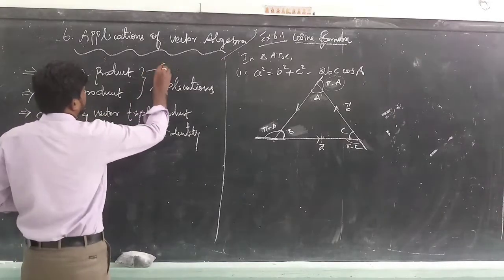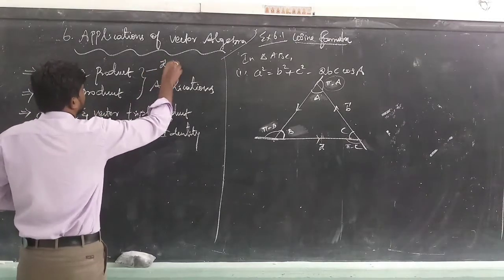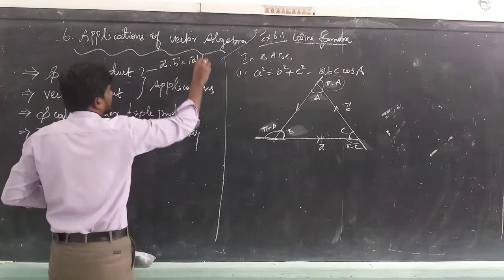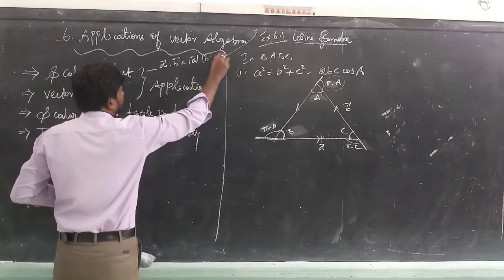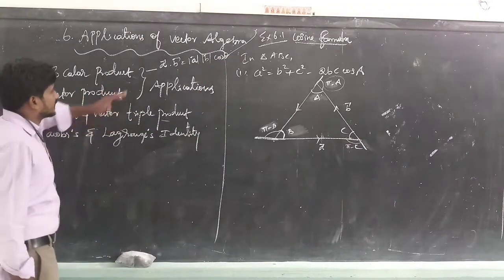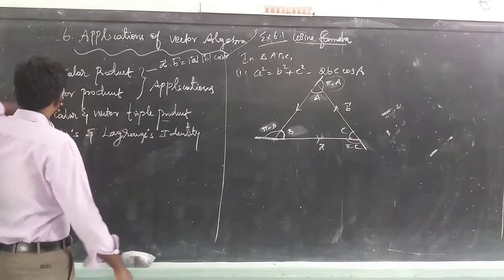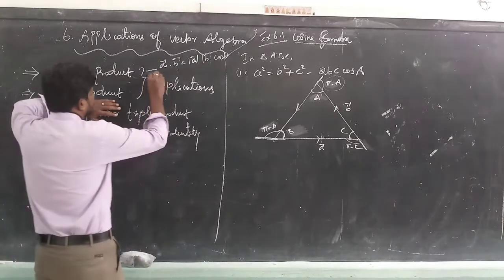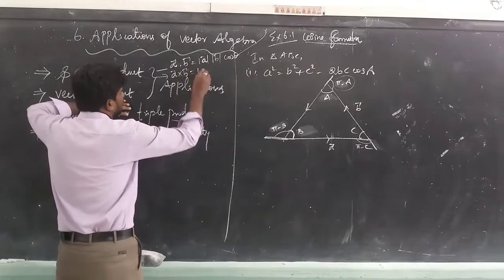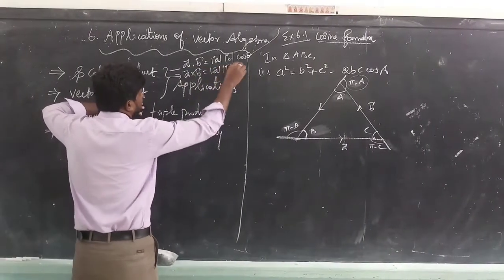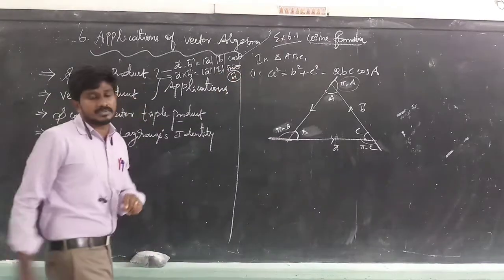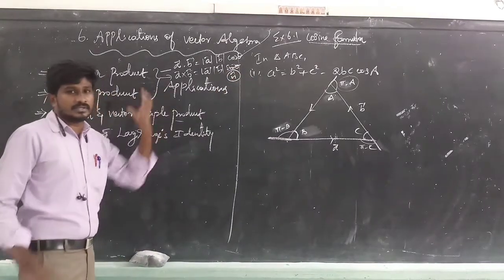One is scalar product and one is vector product. The scalar product formula is: a-vector dot b-vector equals modulus of a-vector times modulus of b-vector times cos theta, where theta is the angle between a-vector and b-vector.